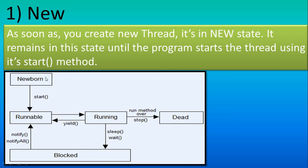The new born stage simply means creating the thread object — how to create a thread object we will see in the next tutorial. Once you use the start method, your thread will switch to the runnable stage. For moving from new born into runnable stage, there is the start method.